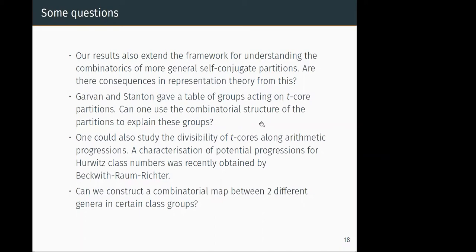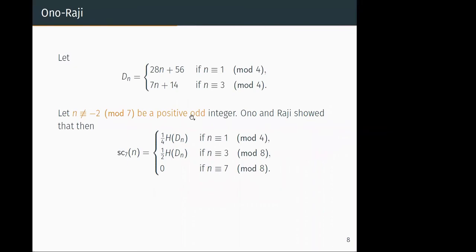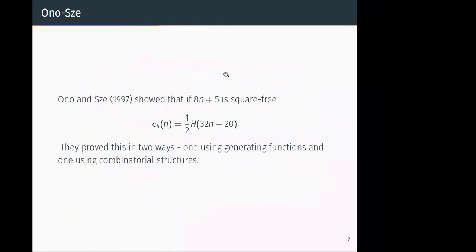Okay, thank you very much for a beautiful talk. Any questions? So I have a question. You mentioned that there's basically a relationship between class numbers and counts of these t-cores. So I'm curious, like for example, there's this result of Watkins classifying all discriminants for which the ordinary class number is at most 100. He was able to give a complete list unconditionally. Can this be used to prove any sort of results of this flavor?